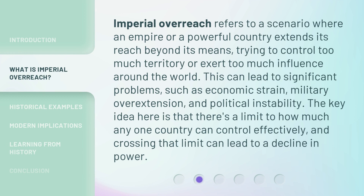Imperial overreach refers to a scenario where an empire or a powerful country extends its reach beyond its means, trying to control too much territory or exert too much influence around the world. This can lead to significant problems, such as economic strain, military overextension, and political instability. The key idea is that there's a limit to how much any one country can control effectively, and crossing that limit can lead to a decline in power.